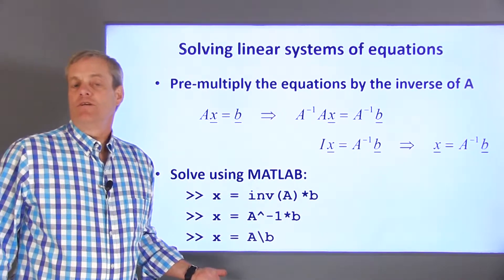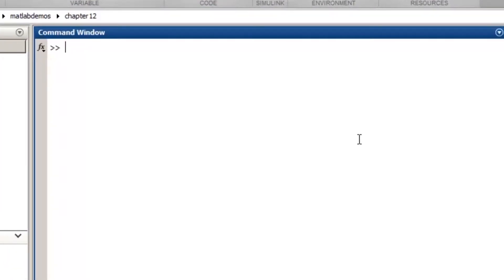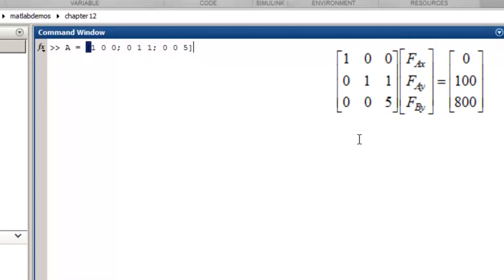Now let's use MATLAB to solve the equations in our example. First, I'll create the A and B matrices. A equals [1, 0, 0; 0, 1, 1; 0, 0, 5]. And B equals [0; 100; 800]. To solve for the unknowns, set X equals A backslash B. The result is 0, negative 60, 160.